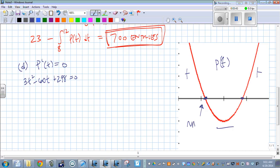So what kind of a point on p are we going to have at this x value? Maximum, right?